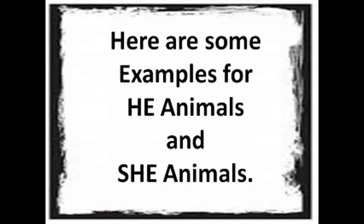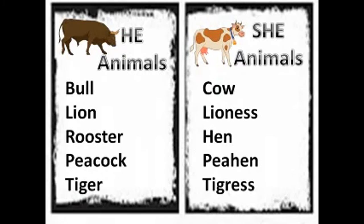He animals and she animals: Cow — Bull, Lion — Lioness, Rooster — Hen, Peacock — Peahen, Tiger — Tigress.